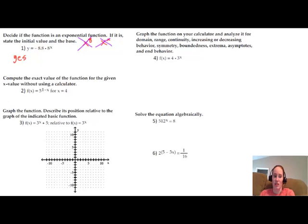This one's a yes, and then we need to answer the other questions that go with it. The initial value is what we get if we plug in a zero where x is, and if we do that, it makes this part go away, leaving us with just negative 8.8. I'm going to abbreviate that IV and say that that's negative 8.8.